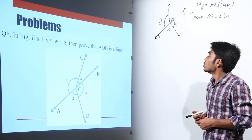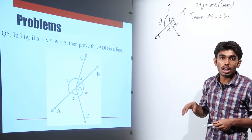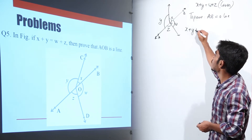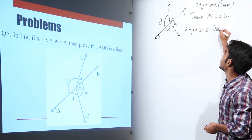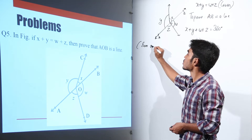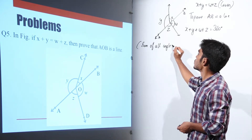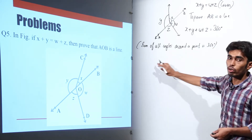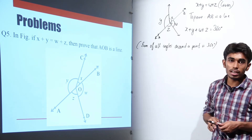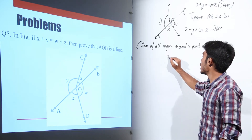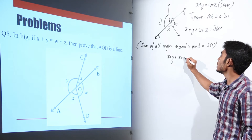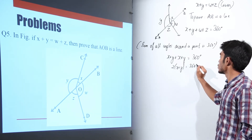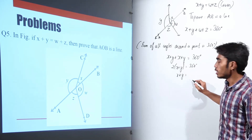The sum of all angles around a point is 360 degrees, as we learned in a previous example. So x plus y plus w plus z equals 360 degrees. Since x plus y equals w plus z, we can substitute w plus z with x plus y, giving 2 times (x plus y) equals 360 degrees, so x plus y equals 180 degrees.